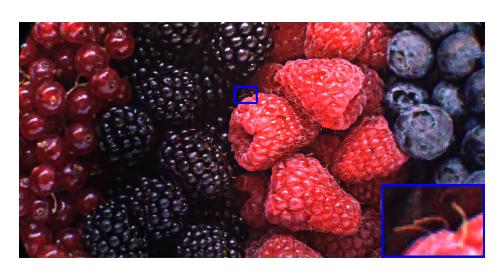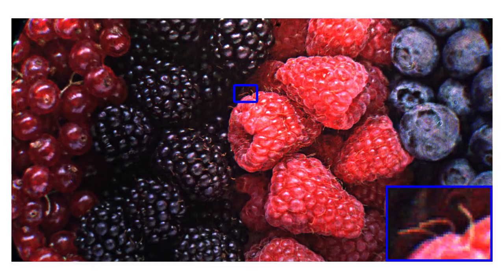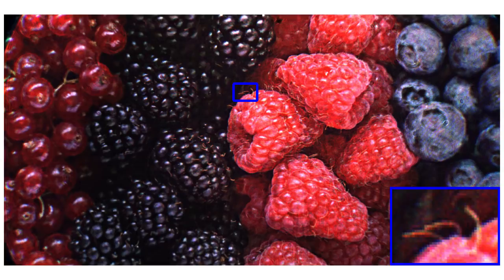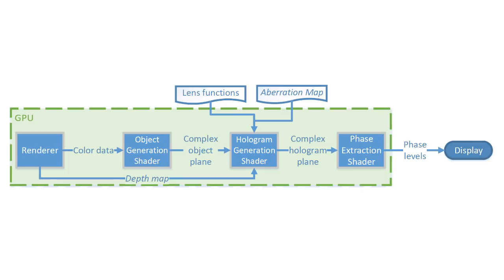Our approach allows the creation of high-quality, full-color holograms with high resolution and image quality. Here we show a photograph of an image taken on a prototype display. This hologram was calculated at a color field rate of 260 Hz. The field of view is 70 degrees horizontally.